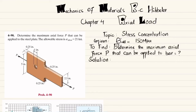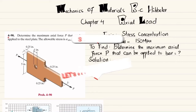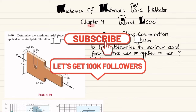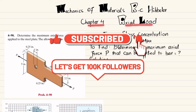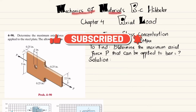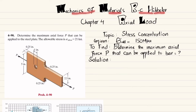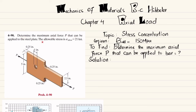Welcome back. In this video we are going to solve problem 4-90, taken from chapter 4 on axial load. The book is Mechanics of Materials by R.C. Hibbeler, and this comes under the topic of stress concentration. The statement is: determine the maximum axial force P that can be applied to this steel plate. The allowable stress is 21 ksi.